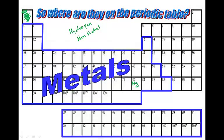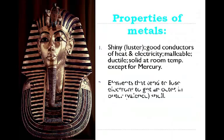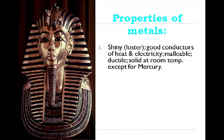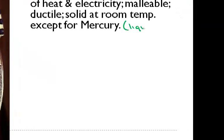So some other properties of metals: they're shiny, which means they have luster. They're good conductors of heat and electricity, which is why it's not a good idea to use full metal instruments when you're cooking. That hot metal spoon or metal spatula is going to heat up because the metal is a good conductor of heat and electricity. They're solid at room temperature except for mercury, which is a liquid.